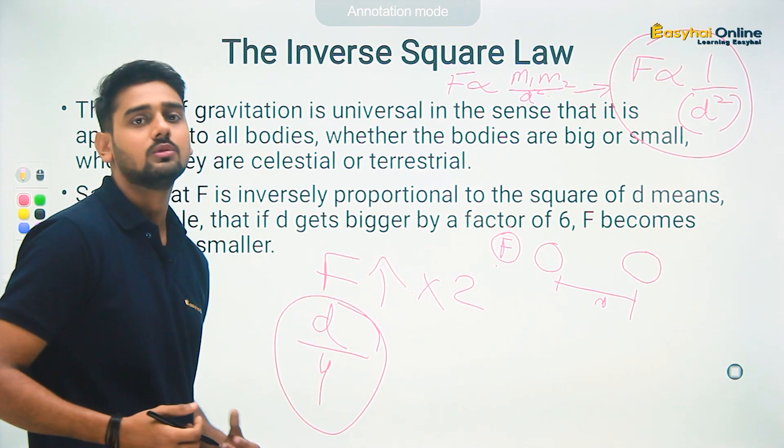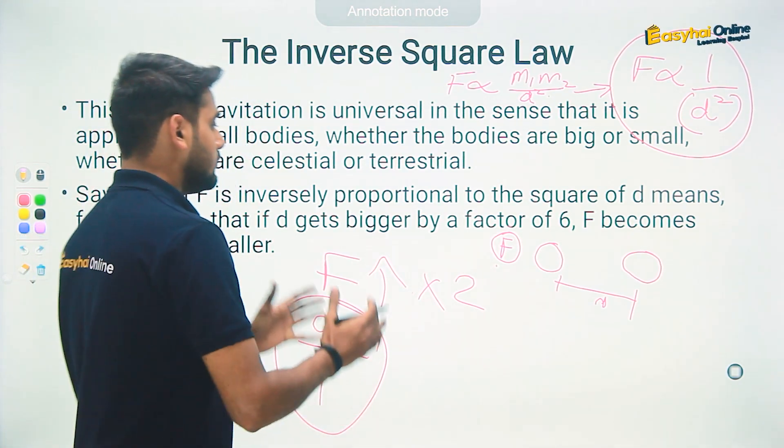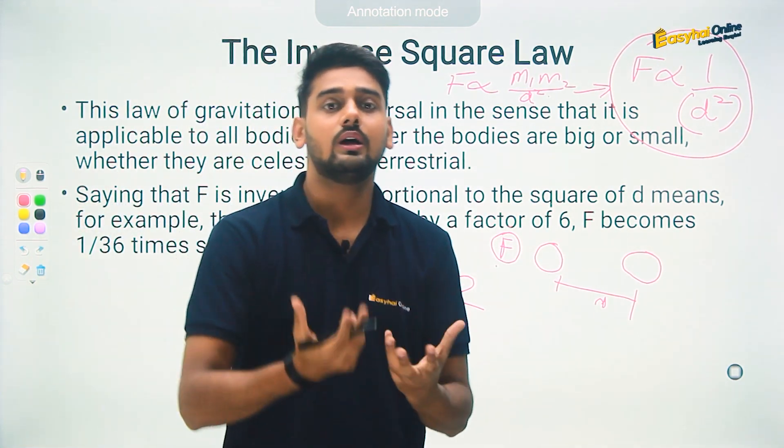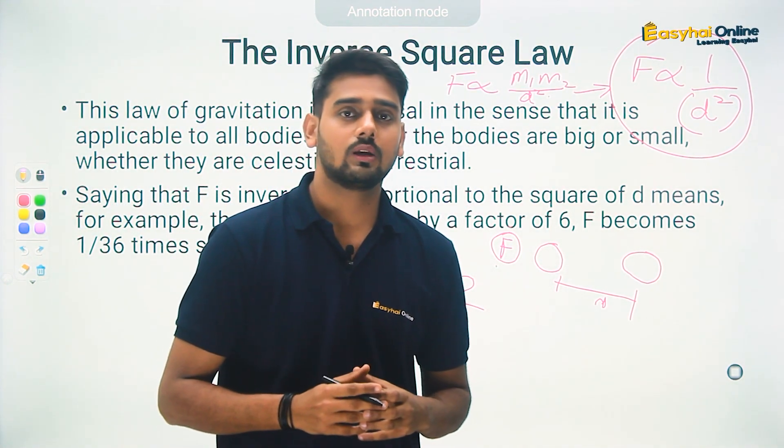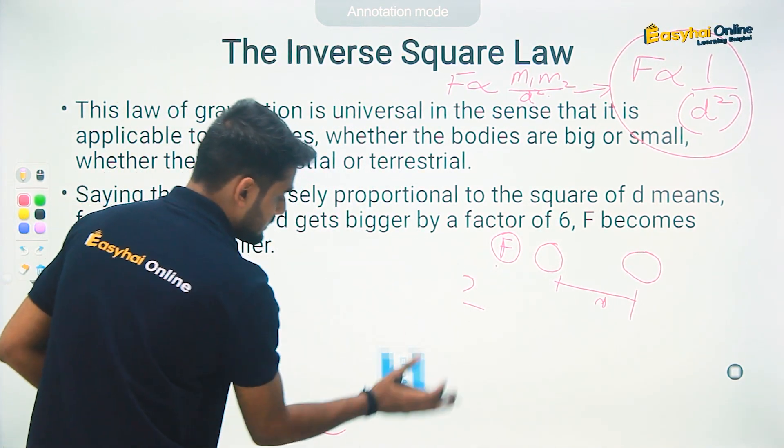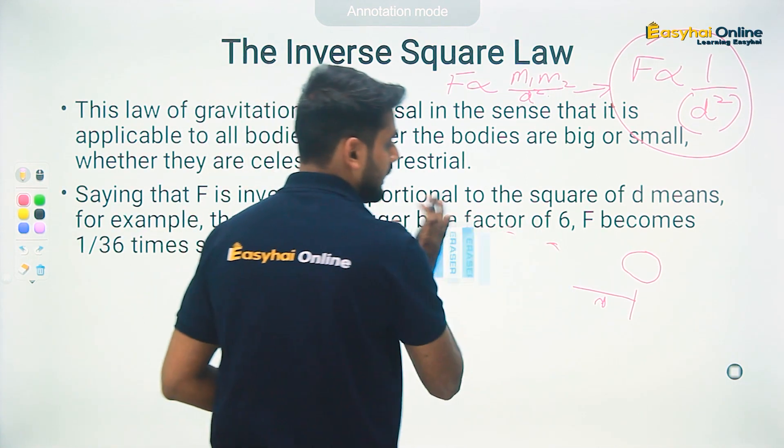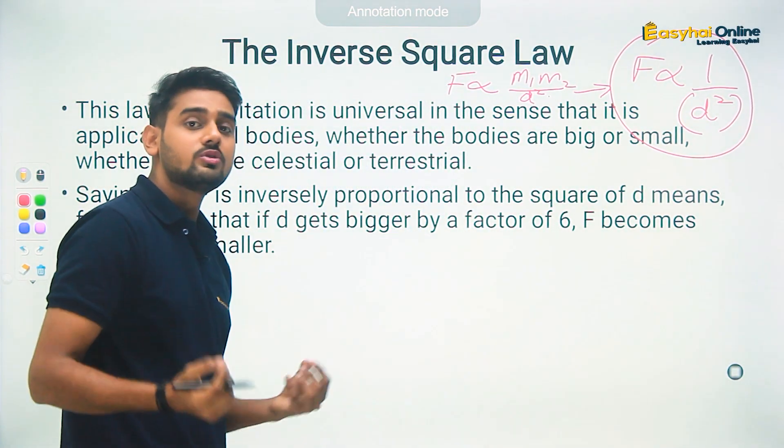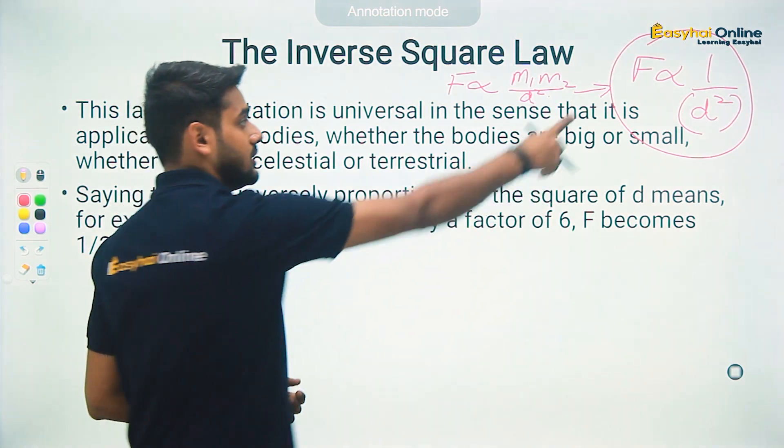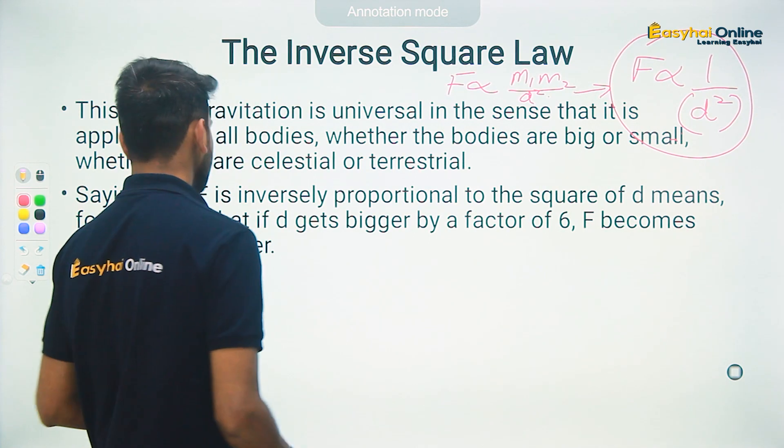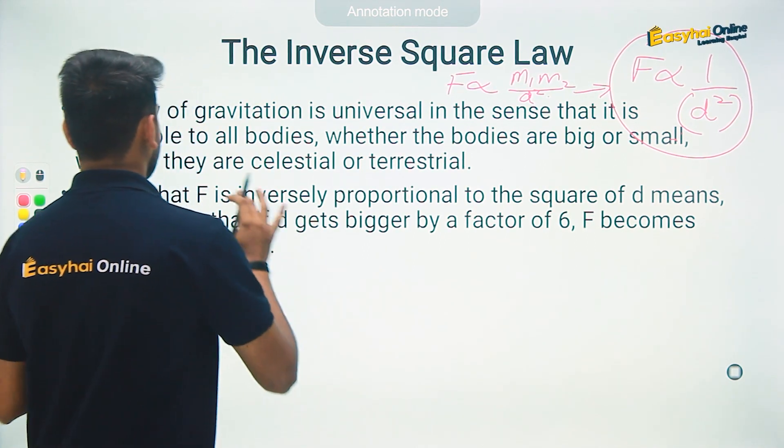This means if you increase the distance, the force decreases by the square of the distance. This means actually when something is far from you, the gravitational force reduces, and it does not reduce proportionally - it reduces by inverse square relation. That's the meaning of this.